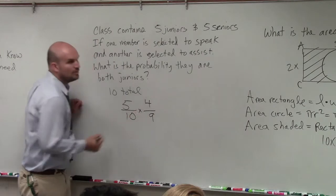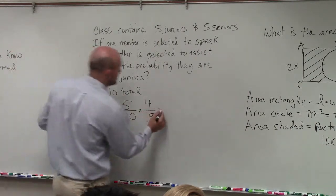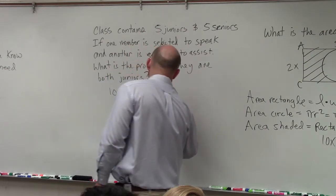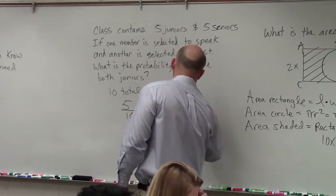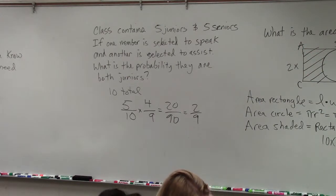So you just multiply the probability of each one of those. Five times four, 20 over 90, which reduces down to 2/9, which is answer H.